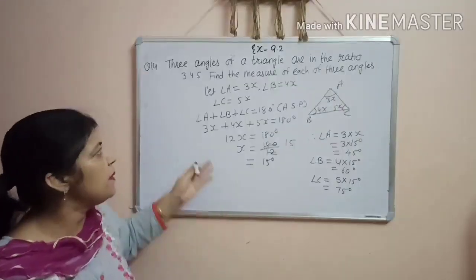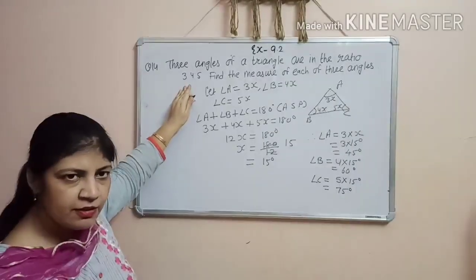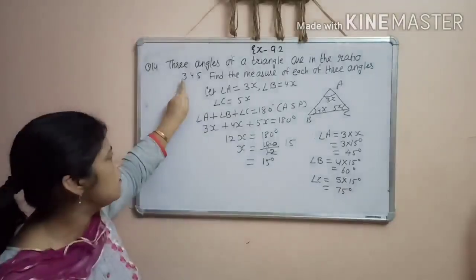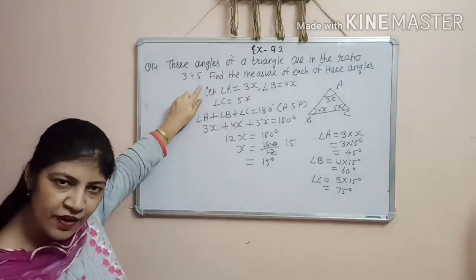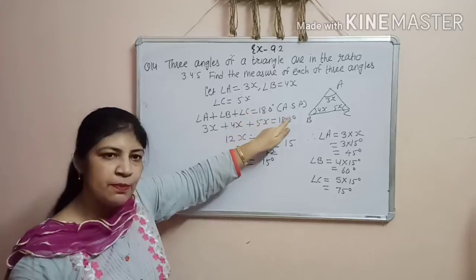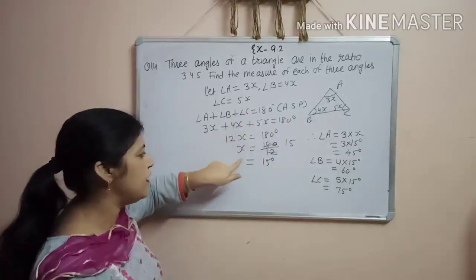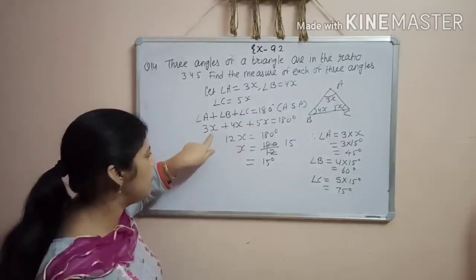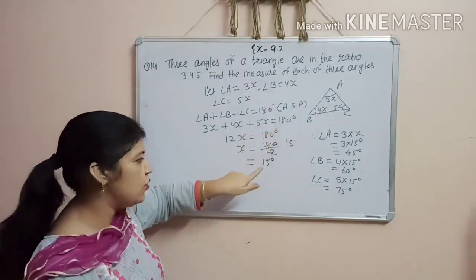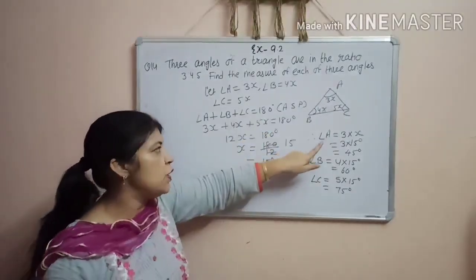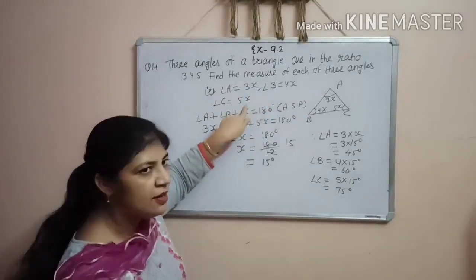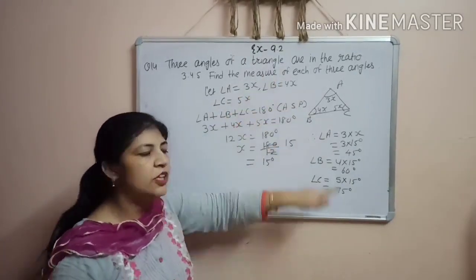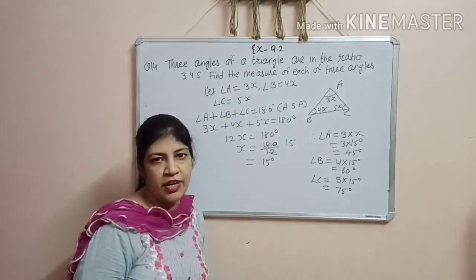Clear? Very simple. The ratio is given. Ratio means these angles will be 3x, 4x and 5x. By using angle sum property, you can find the value of x. Because it will form a linear equation. And you can find this value of x. And put this value of x in each angle. You will find all 3 angles of a triangle. Clear?